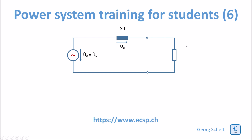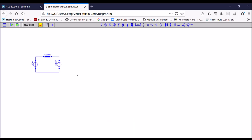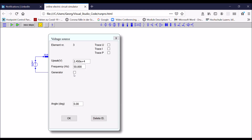Now I want to see what happens if I replace my load — my resistance — by an infinitely stiff bus, a stiff grid. The stiff grid does two things: first, the frequency is 50 Hz and will stay there independently of what the generator supplies; second, it also delivers the nominal voltage independently of the voltage of the generator. My generator still operates in generation mode with a droop and a nominal power output of 100 MW per phase.